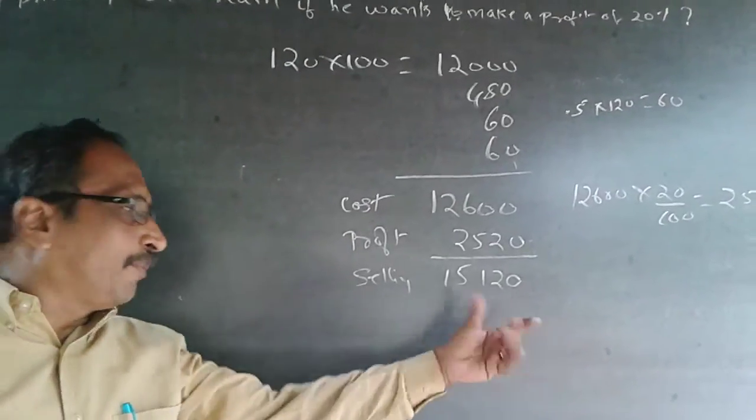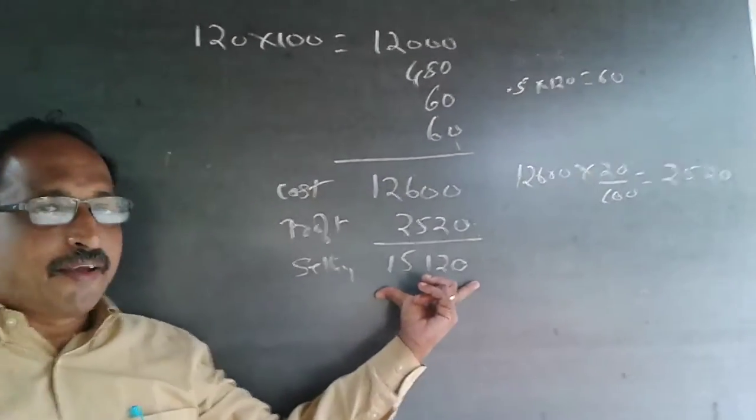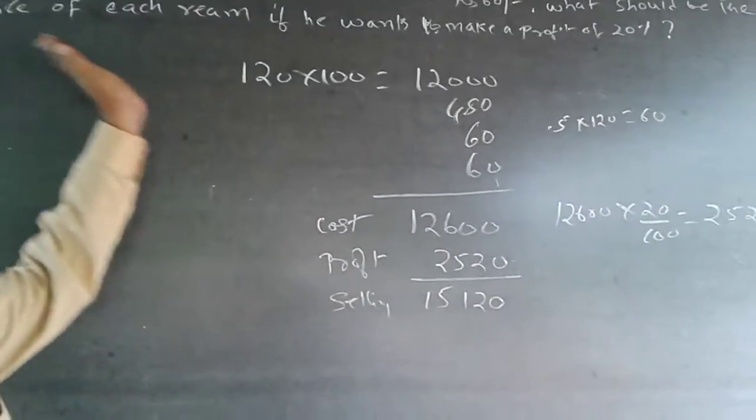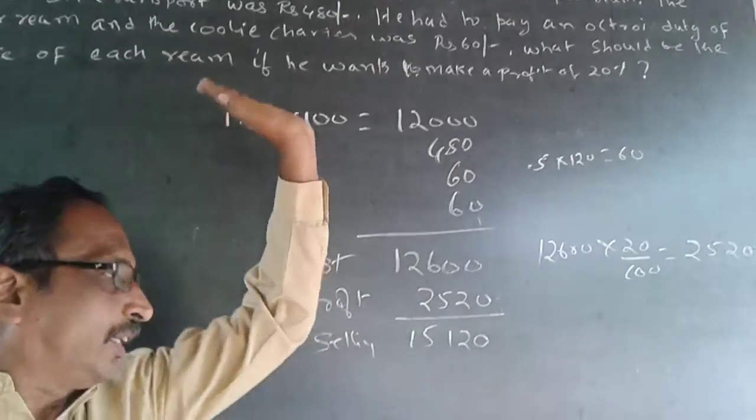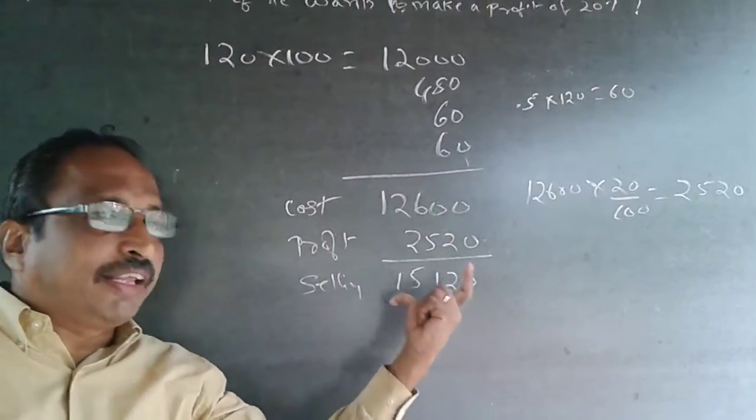Some students have made the mistake of giving the answer as 15,120. But the question here is per ream. The selling price of each ream if you want to make a profit of 20%. Be careful with the question. You will have to give the answer for each ream.